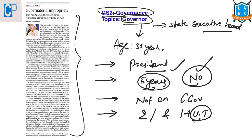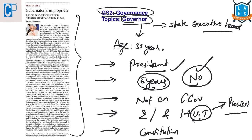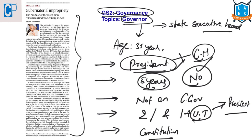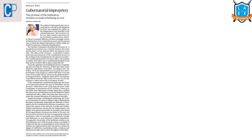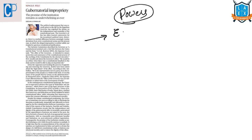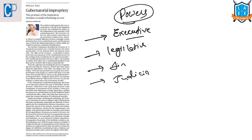While administering a union territory, the Governor acts as an agent of the President; while administering the state, the Governor is the head of the constitution. The President appoints the Governor as an outsider by consulting the Chief Minister of that state. Like the President, the Governor enjoys executive powers, legislative powers, financial powers, and judicial powers.